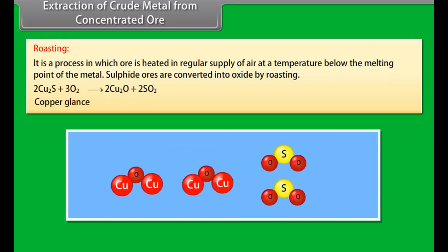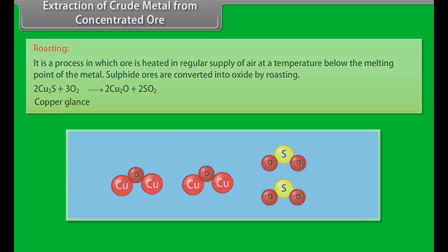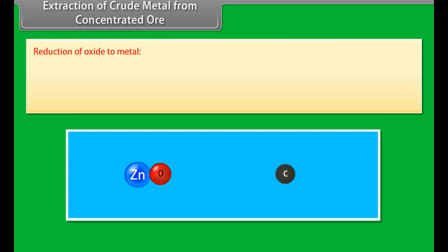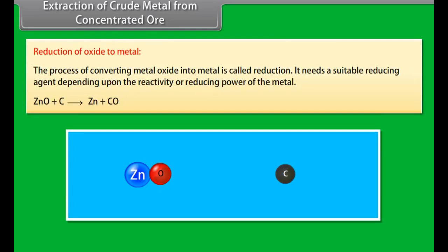Conversion of oxide: It is easier to reduce oxide than sulphide or carbonate ore. This can be done by two methods: Calcination and roasting. Calcination involves heating when the volatile matter escapes leaving behind the metal oxide. Roasting is a process in which ore is heated in regular supply of air at a temperature below the melting point of the metal. Sulphide ores are converted into oxide by roasting.